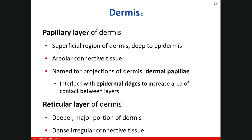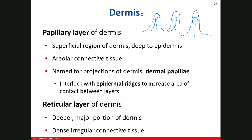When we see the papillary layer, it has these bumps called the dermal papillae. Up in those bumps you'll see nervous tissue — Meissner's corpuscles — but you'll also have blood vessels up in here. You can have some nervous tissue up in here, like Meissner's corpuscles.